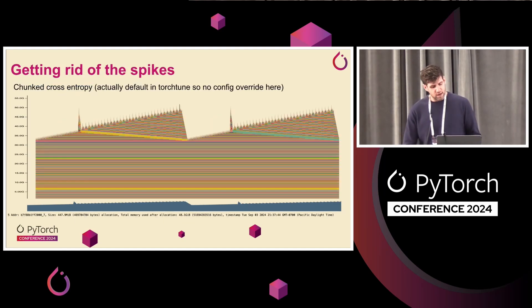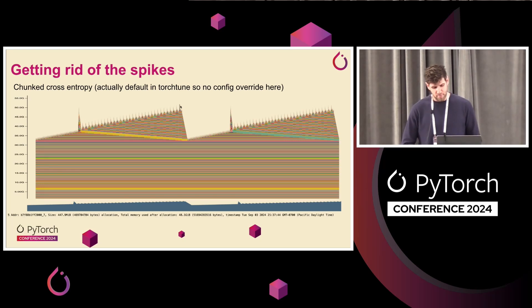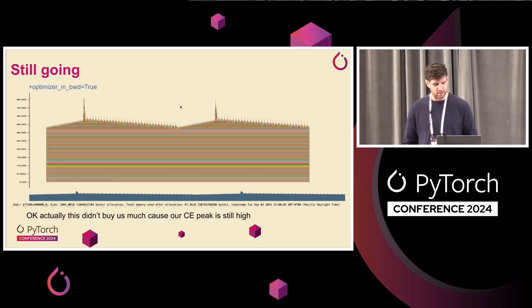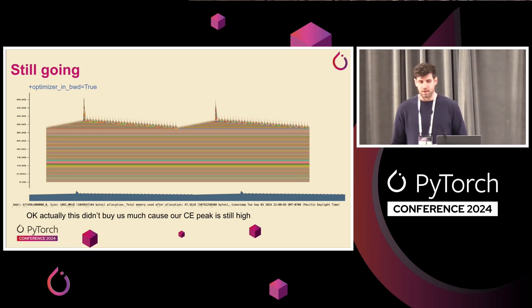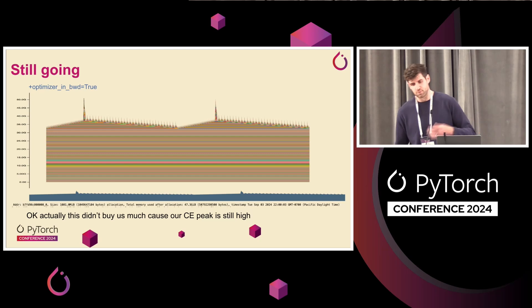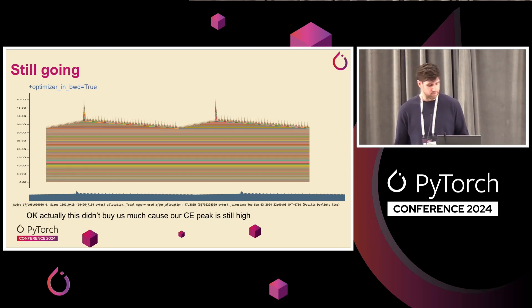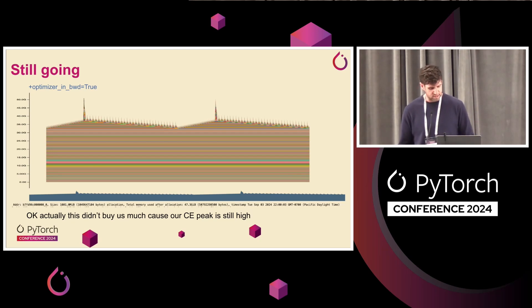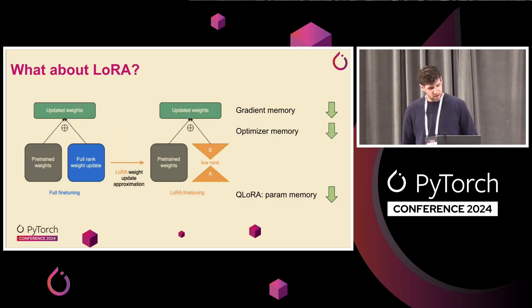Now the peak is actually at the end of the backward, just above the cross-entropy. We can do some other things to reduce the memory in backward. We can fuse the optimizer step in the backward, and then we throw out the memory from the gradients as we accumulate them — we take the step on each parameter as we have the gradients available, and that way we save memory on backward. Now our peak is back to cross-entropy, but we didn't actually save that much memory by doing this because the peaks are similar.